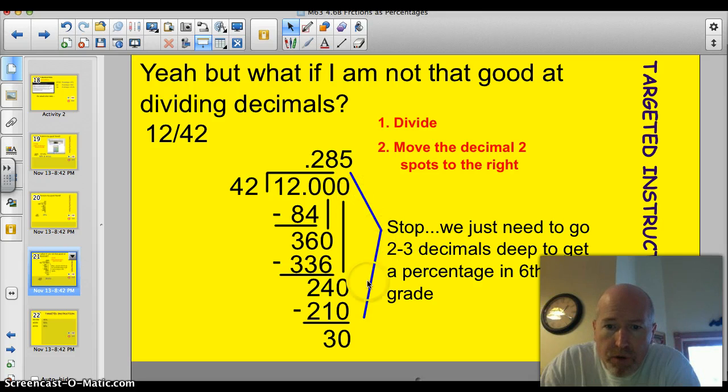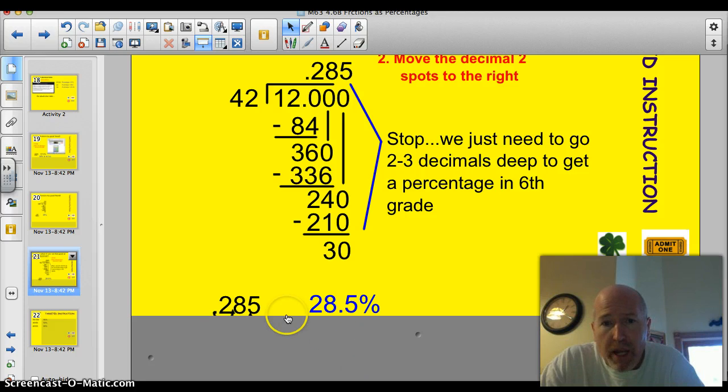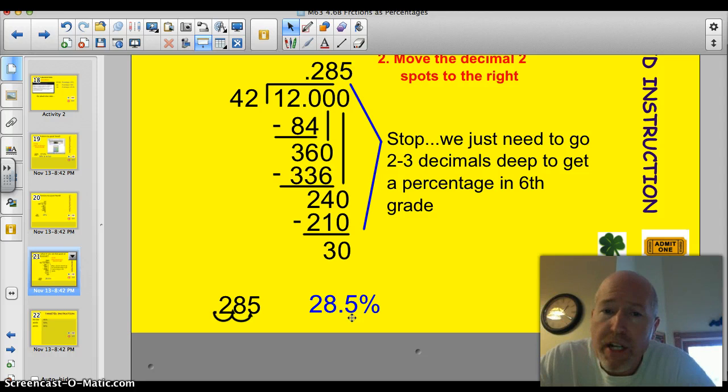It goes in there five times. And what I said here is don't freak out now. We can just stop. We've done it three spots. And that's going to give us a decimal plus an extra percentage point as well. So if you take a look at the answer here, if you move that decimal two spots to the right, you've got 28.5%. And again, if you want to call that 29%, that's fine. It does continue to go on. But in sixth grade, let's just go three decimals deep. And if you can't do that, do two decimals deep. I thought that'd be fair.